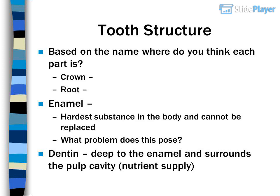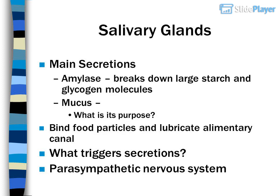Tooth structure — based on the name, where do you think each part is? Crown, root, enamel — the hardest substance in the body and cannot be replaced. What problem does this pose? Dentin is deep to the enamel and surrounds the pulp cavity, providing nutrient supply.